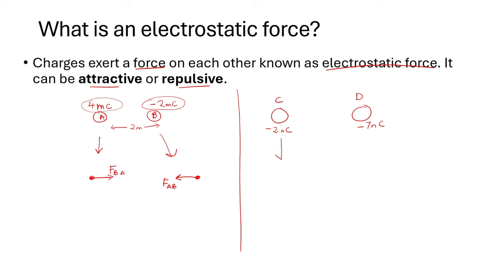Let's represent that using a free body diagram. For C, we draw a dot. Because D is on the right of C and D is repelling C, it is going to push it to the left. This arrow indicates the force of D on C — that's why I label it force DC. For the free body diagram of D, C is to the left of D and it is pushing D to the right, so the arrow faces that direction — the force of C on D.